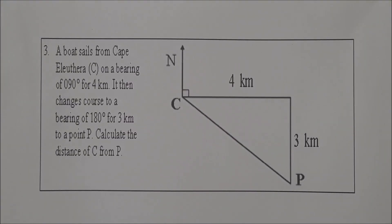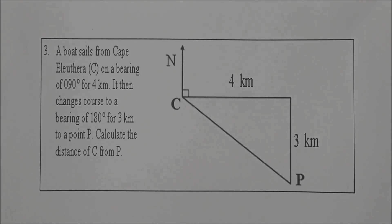Question 3. A boat sails from K.P. Luther, labeled C, on a bearing of 090 degrees for 4 kilometers. It then changes course to a bearing of 180 degrees for 3 kilometers, to a point P. Calculate the distance of C from P.